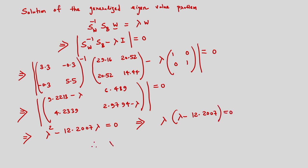Corresponding to this I will be getting two eigenvalues. One is lambda 1 = 0, and the other is lambda 2 = 12.2007. I will be getting two eigenvalues — one is 0 and the other is 12.2007 — and I have to determine the best projection direction based on these eigenvalues.